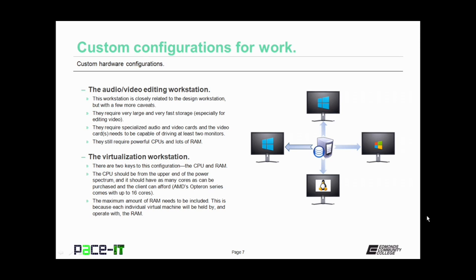The virtualization workstation has two keys to its configuration: the CPU and the RAM. The CPU should come from the upper end of the power spectrum and should have as many cores as can be purchased and the client can afford. AMD's Opteron series of processors comes with up to 16 cores. The maximum amount of RAM needs to be included, because each individual virtual machine will be held by and operate within RAM — it's all shared between virtual machines, so you need a lot of it.